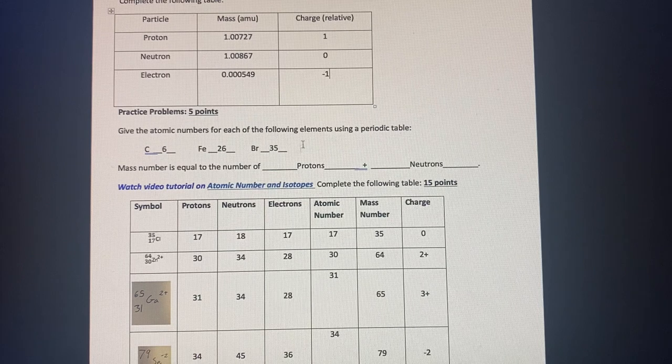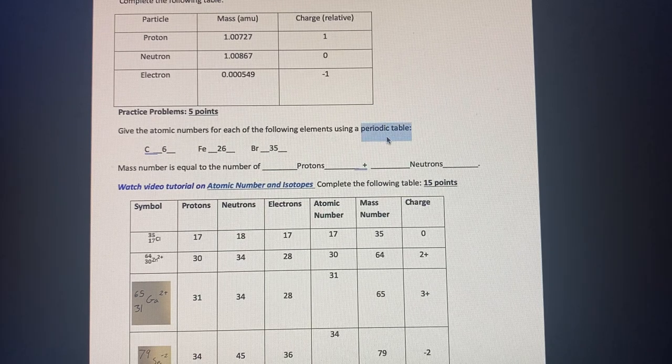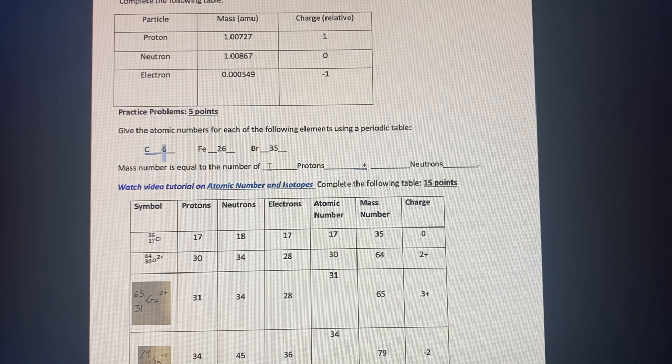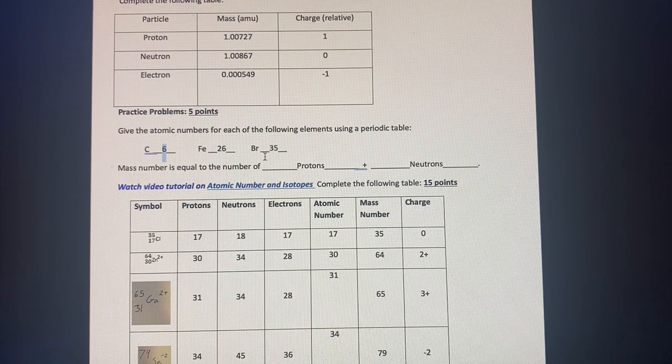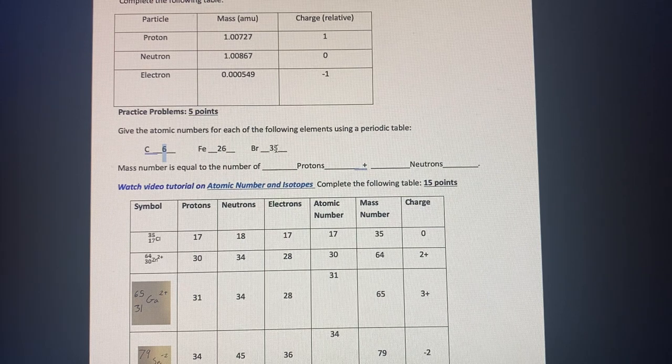We then are able to use the periodic table of elements for reference and we're able to find C, which is carbon, which has an atomic number of six. Fe, which is iron, with an atomic number of 26. Bromine with an atomic number of 35.